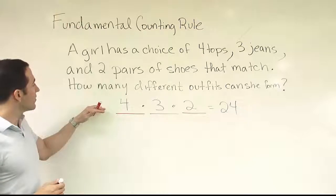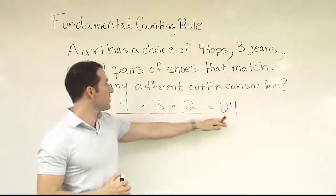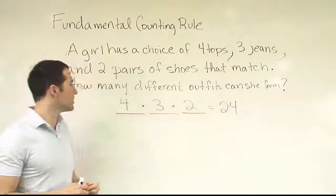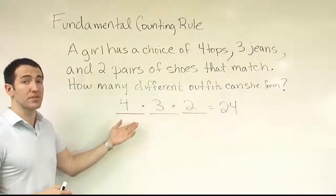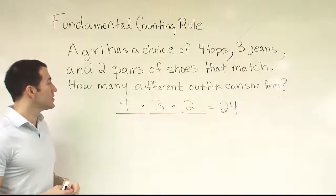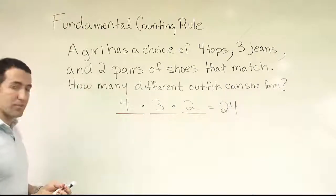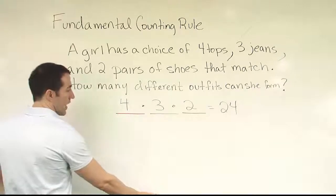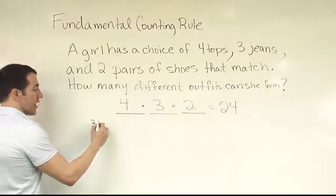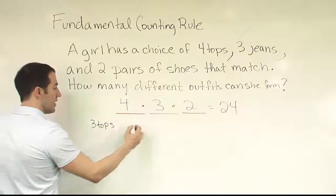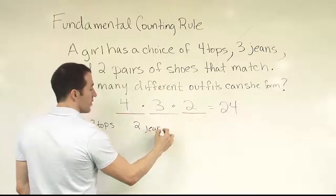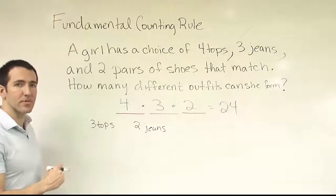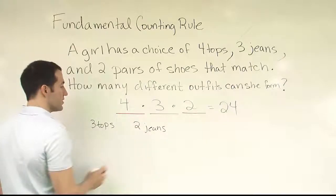So I wanted to show you a simpler example than this one, just so you can believe me that the product is the proper way to finish the problem. You may say, how did I know I should multiply? Maybe I should have just added them together. So let's give a simple example to see if it makes sense to you why you multiply. Let's imagine a different scenario where the woman only had a choice of three tops to choose from and two jeans, and that's all we're going to worry about. We won't worry about the shoes. Maybe she only has one pair of shoes. So three tops, two pairs of jeans.